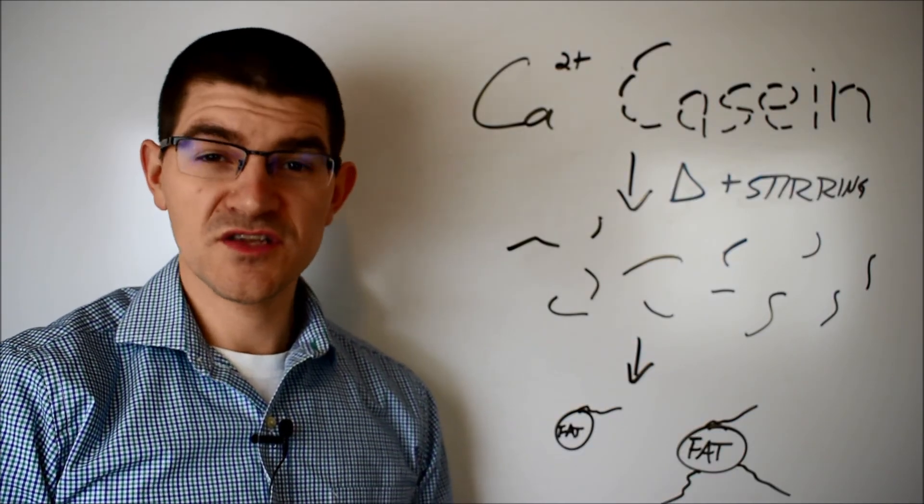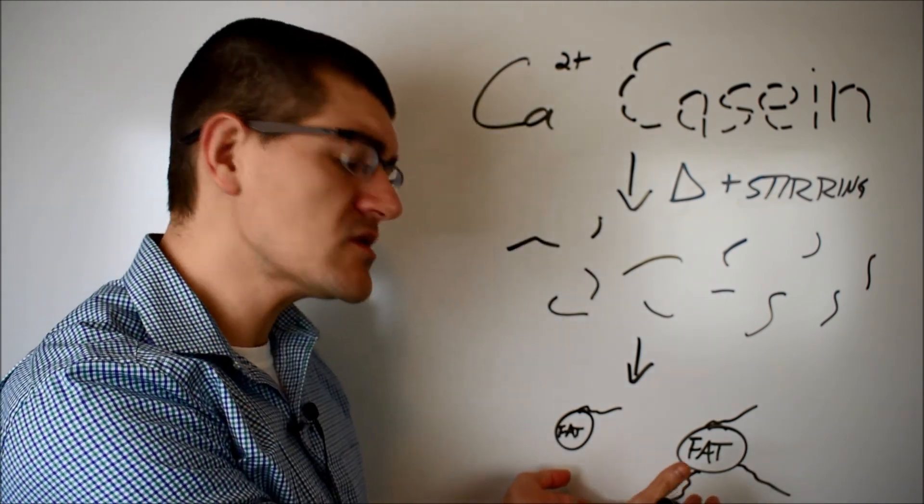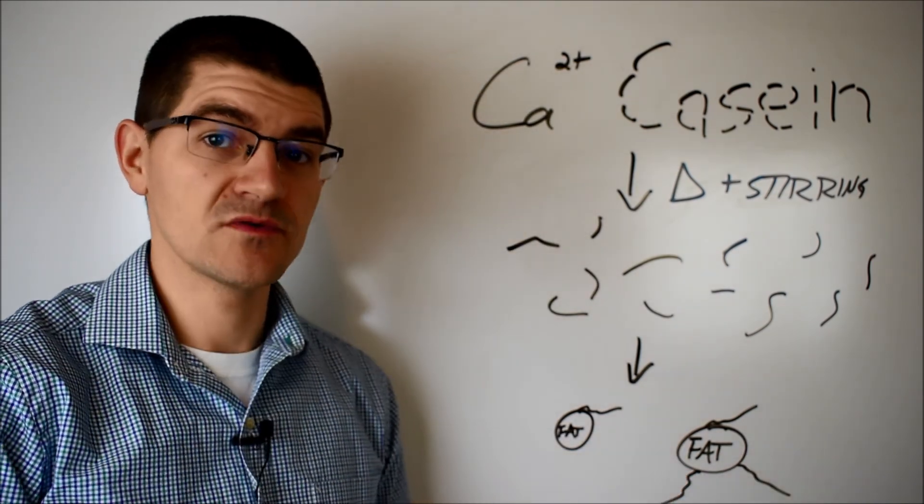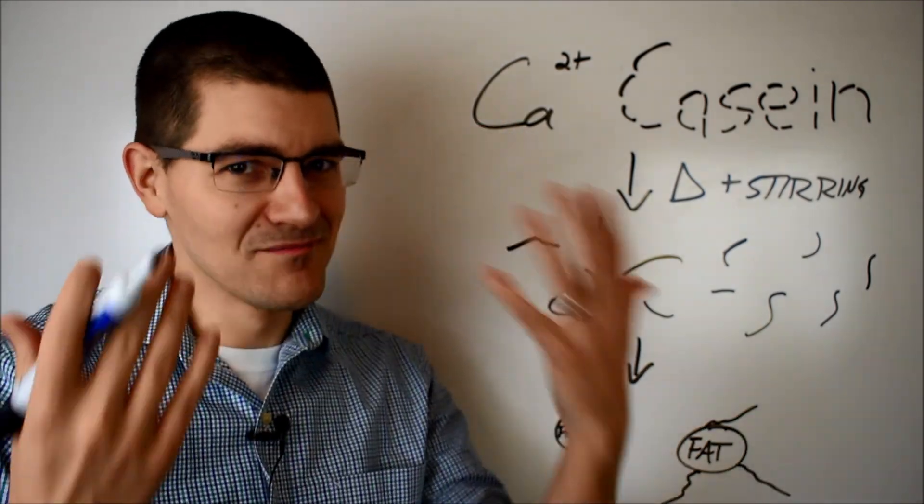Those hydrated and dispersed smaller protein pieces can then coat the fat globules and make them more stable in the cheese-protein matrix, hence emulsification.